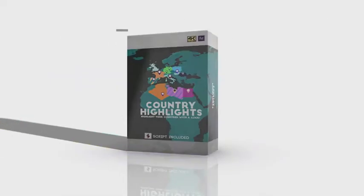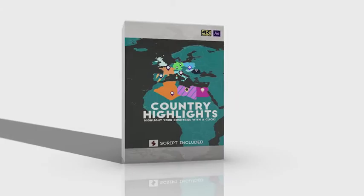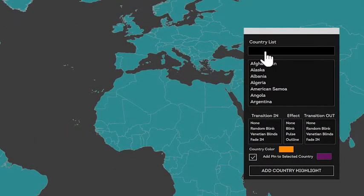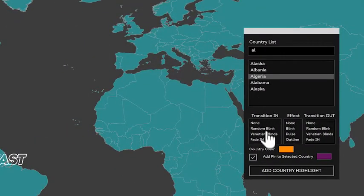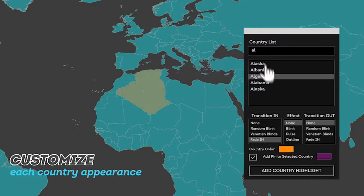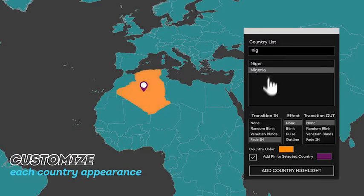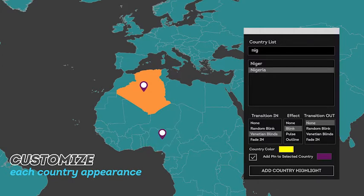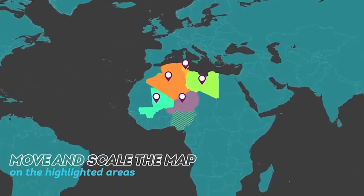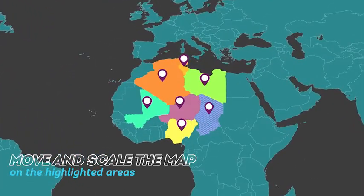The final product is a very useful tool when you need to highlight countries in the world. Country Highlights is made by a project file and a script. Using it is very fast and easy. Simply run it and type any country you want to highlight, then set the highlight color, the reveal, and the animation mode, and choose whether to add a pin or not. In no time, you will be able to highlight dozens of countries in the world.